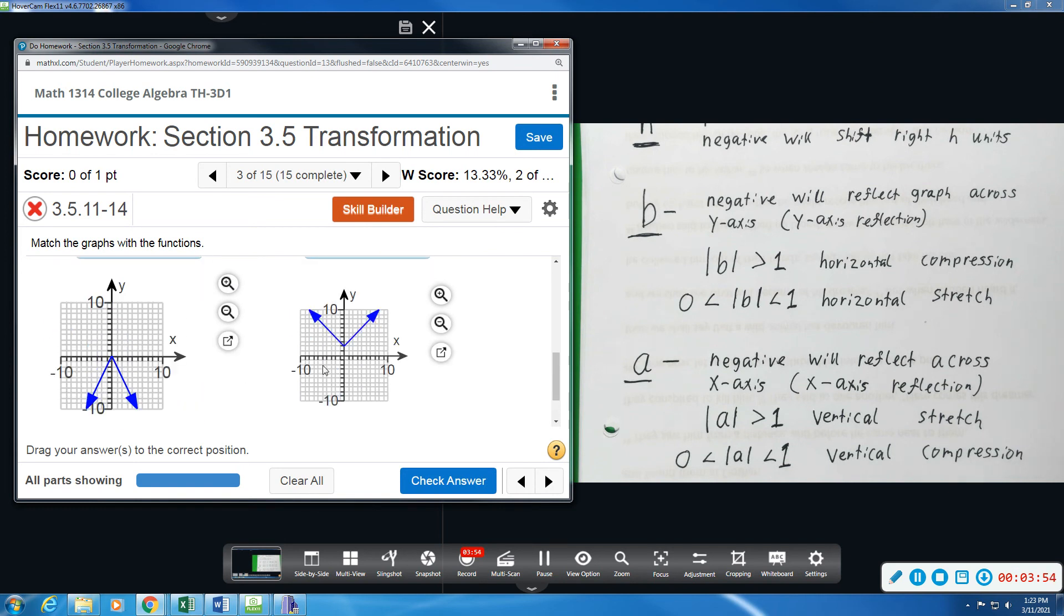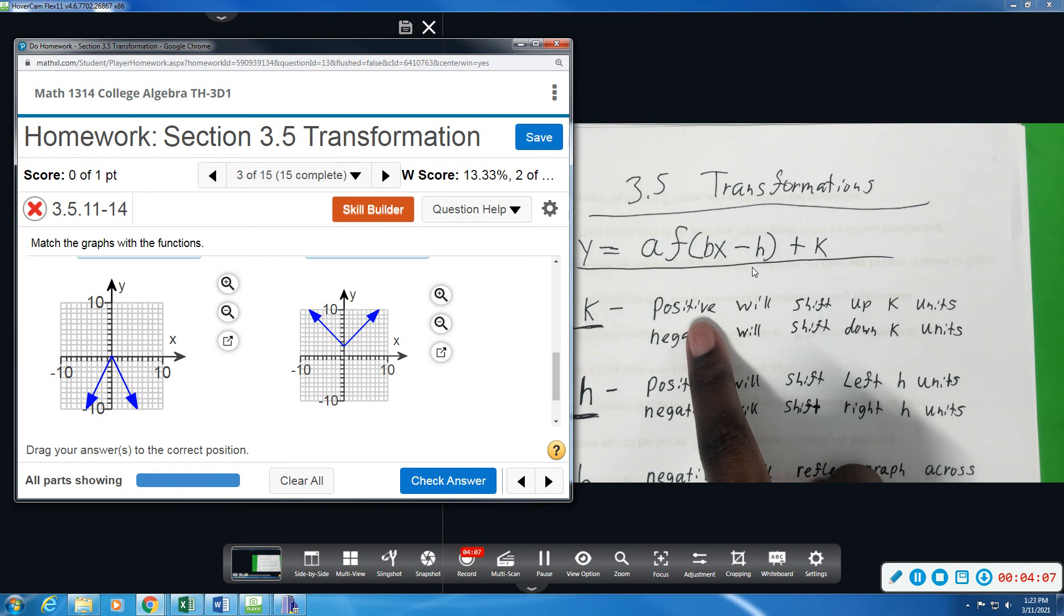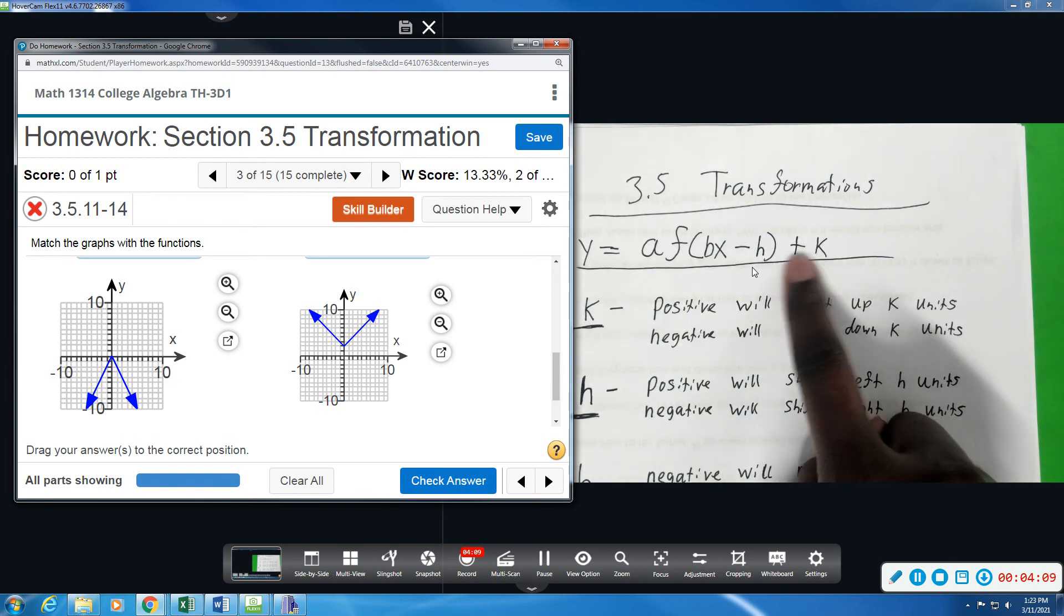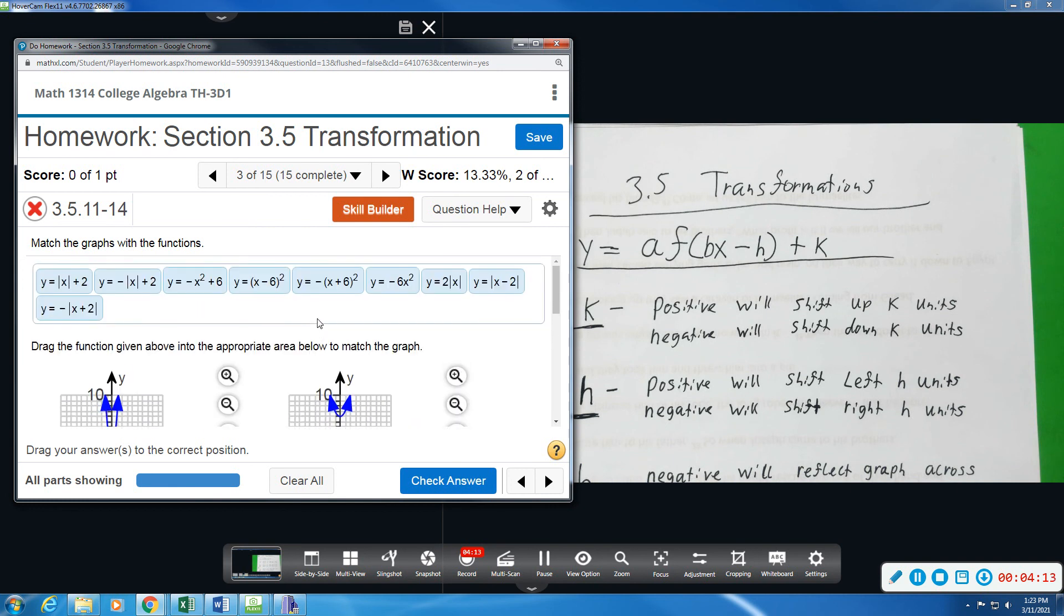And on this equation, the only thing we can tell for certain is that it got shifted up two. So outside of absolute value this time, the K value will shift up two if we have a positive K. So I'm looking for a positive here, a plus two. And that'll be my starting point, and I'll go from there.